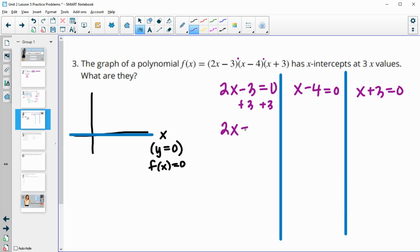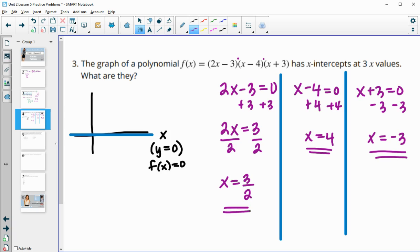But these are our zeros or our x-intercepts. So we'll just add 3 to both sides here, so you get 2x equals positive 3. Then you can divide by 2. So one of your x-intercepts is 3 halves. This one, you're going to add 4 to both sides, so you would get x equals 4 as an intercept. And here, we're going to subtract 3 from both sides, so we get x equals negative 3. So those would be your 3 x-intercepts.